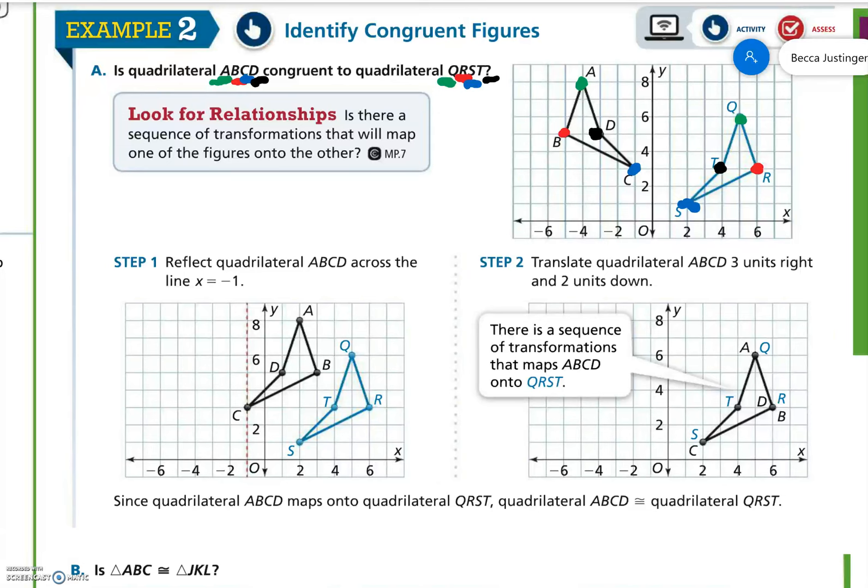So the first step is they're reflecting quadrilateral across the line X equals 1. Remember, X equals 1 is the line that intersects the X axis at 1. So flipping that over this line gives us this figure here. Then we can see, okay, A is at the top, A is at the top. Like everything's facing the same way. We just need to move it. And instead of move, I should say translate, 3 to the right, and 2 down. Since quadrilateral ABCD maps onto quadrilateral QRST, quadrilateral ABCD is congruent to quadrilateral QRST.